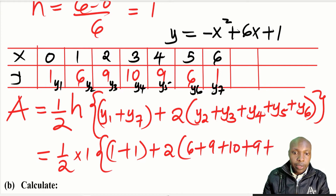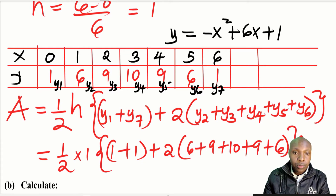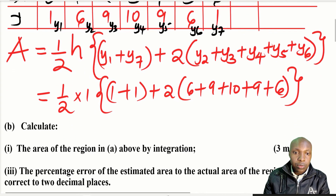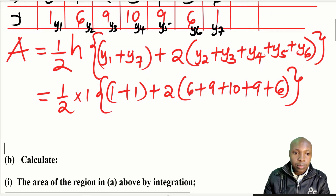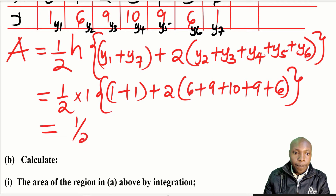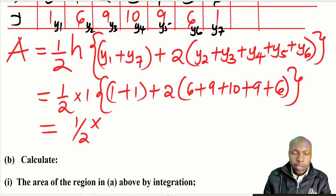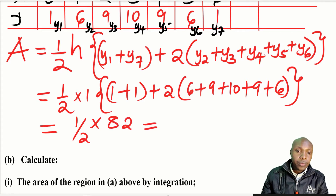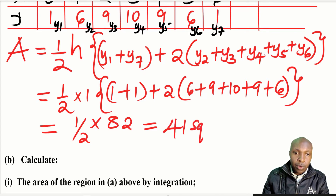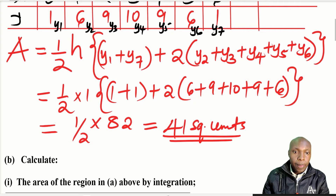After adding everything — y₁ + y₇ plus twice all the middle ordinates — we get a total of 82. So the area equals ½ × 82 = 41 square units. That is the estimated area under the curve using the trapezium rule.